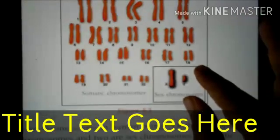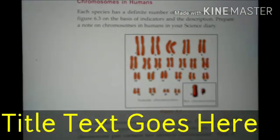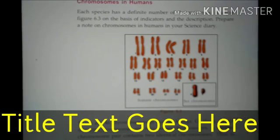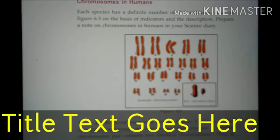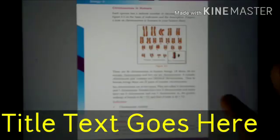The human chromosome has 23 pairs: 22 somatic chromosomes and one pair of sex chromosomes.